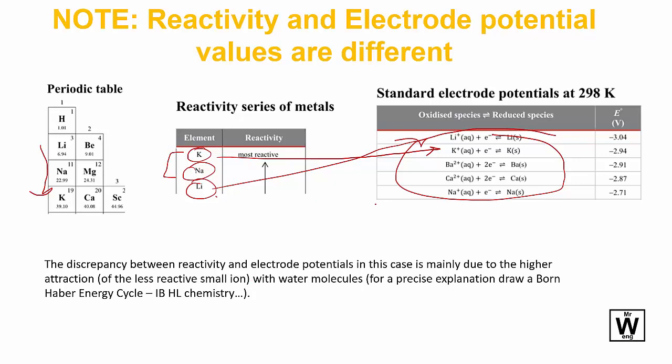OK, so the smaller ion is more reactive with water. If you want to do IB high level chemistry, you can actually precisely mathematically work out why these are in these places using a Born-Haber energy cycle. All right. Thank you.